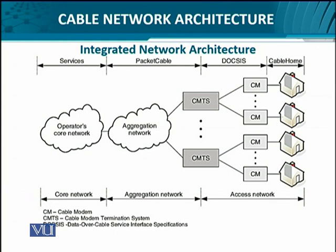The packet cable network allows the CMTS to integrate and route all traffic to respective networks through a services network segment. From left to right: voice, video, data, and radio each have their own networks, all connected through the aggregated packet cable architecture, which interfaces with the CMTS — the intermediate gateway that connects to the home subscriber's cable modem. The most important aspects of this complete end-to-end architecture are the packet cable network architecture design and the DOCSIS specifications.